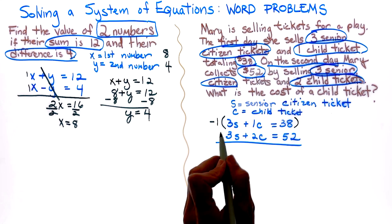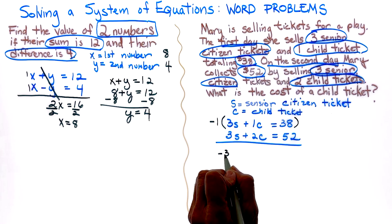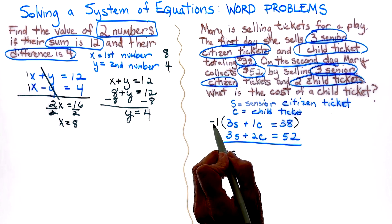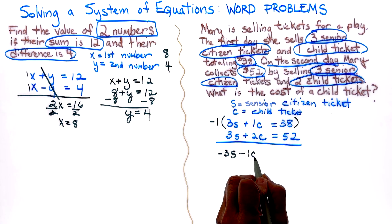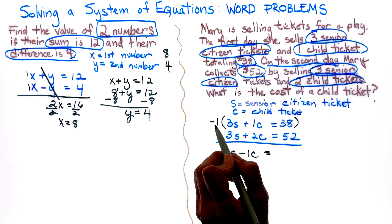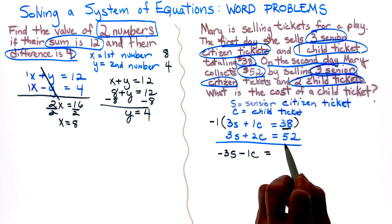Negative one times 3S is negative 3S. Negative one times a positive one is a minus 1C is equal to negative one, you have to remember this guy, times 38 is negative 38.